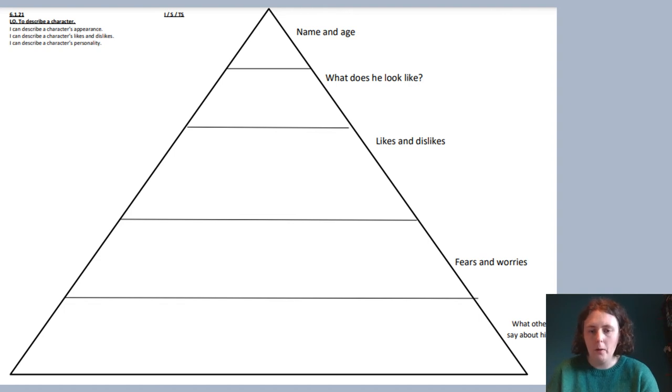Then we've got quite a big box here, and that's for things that he likes and things that he dislikes. Remember, dislikes is things that he doesn't like. So from the story, I'm sure you can think of some ideas of things that he likes doing. What did he like doing in the story? What do you think he didn't like in the story?